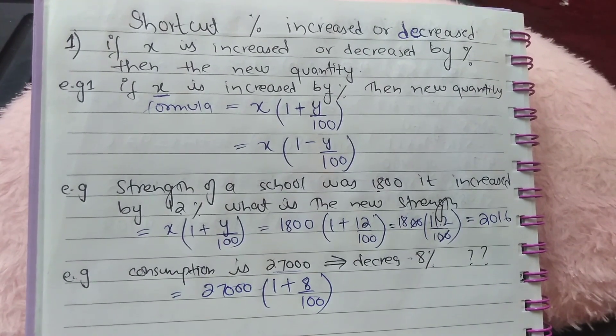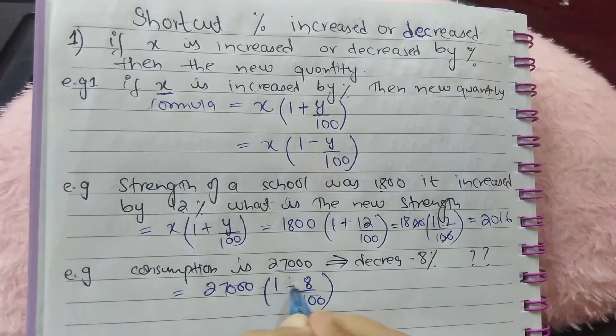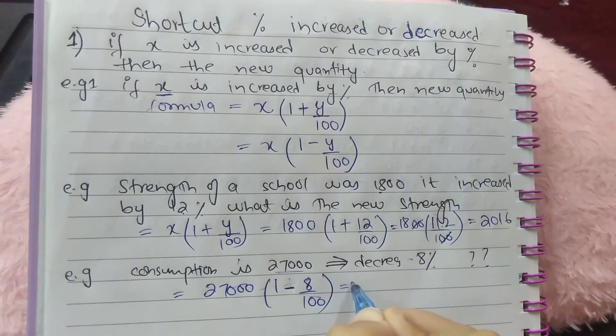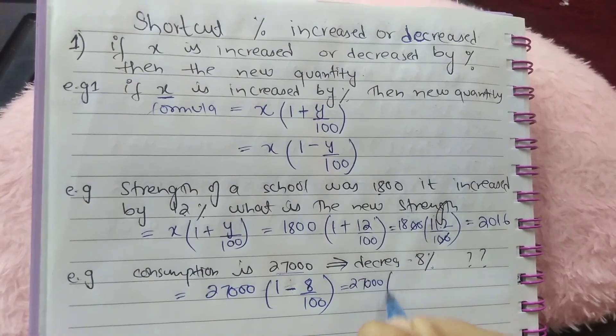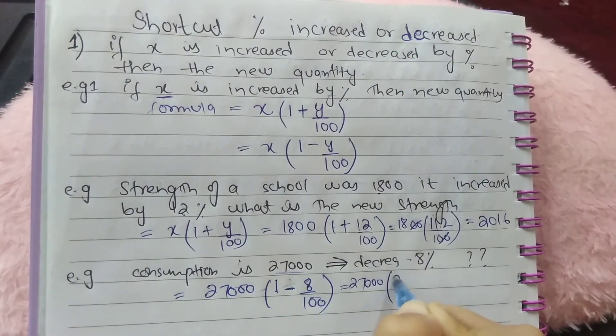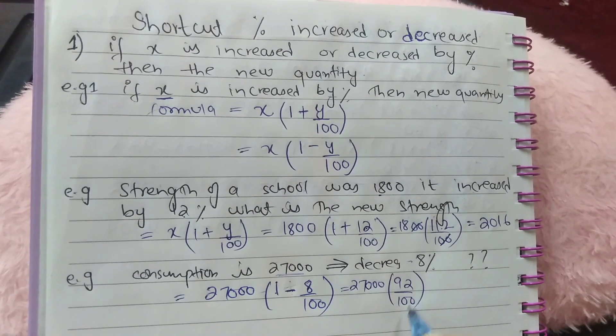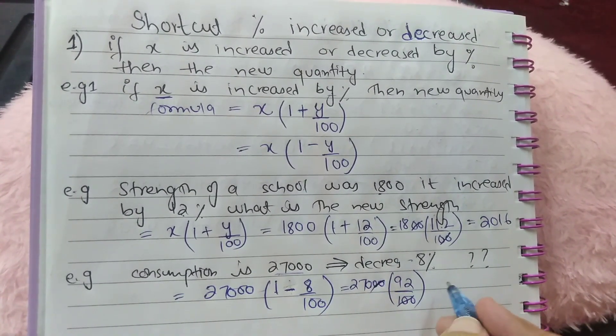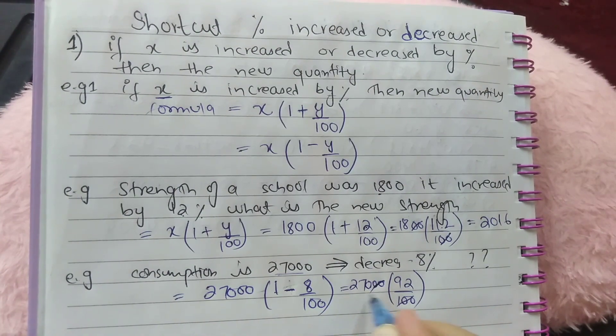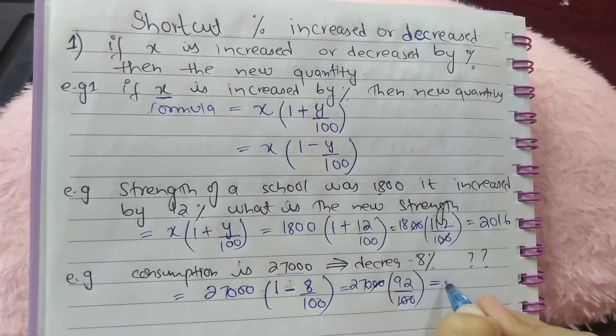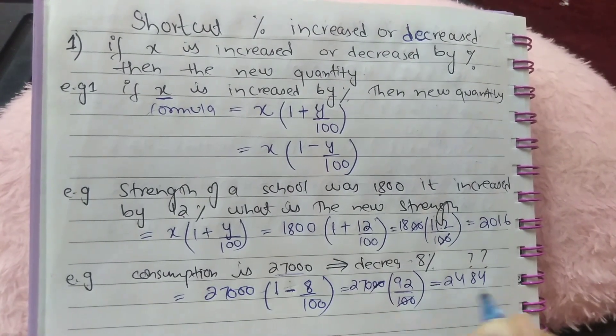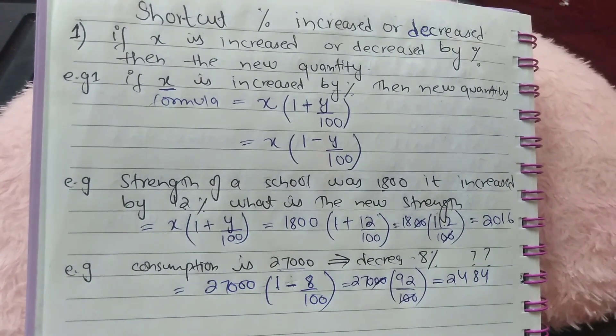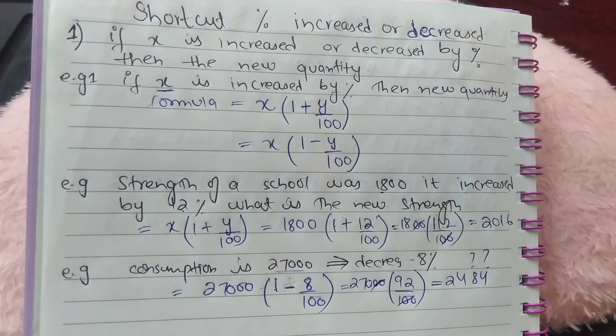As here is decreased, so we will use negative sign. By taking LCM 100, 100 minus 8 is 92 by 100. So by cancelling zeros, 270 multiply by 92 is 24,840.